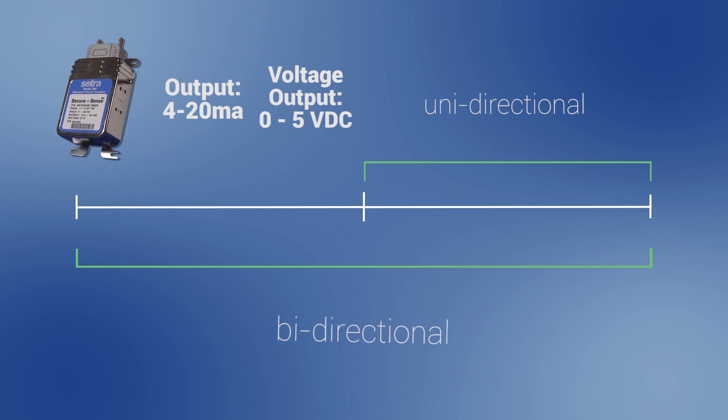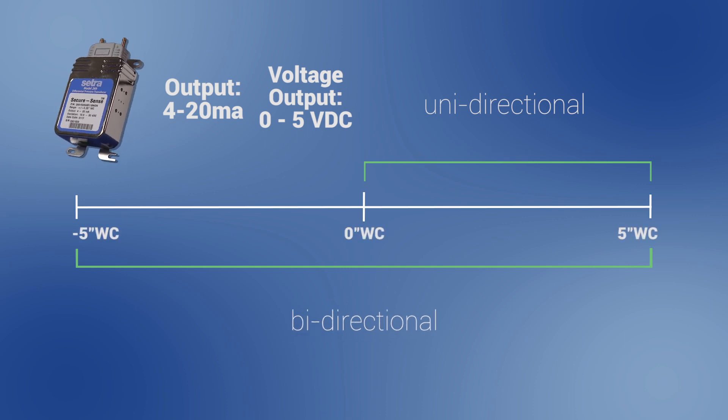If the unit is a bidirectional range like plus or minus 5 inches of water column and 0 to 5 VDC output, the unit would output 0 volts at negative 5 inches of water column, 2.5 volts at 0 inches of water column, and 5 volts at positive 5 inches of water column.